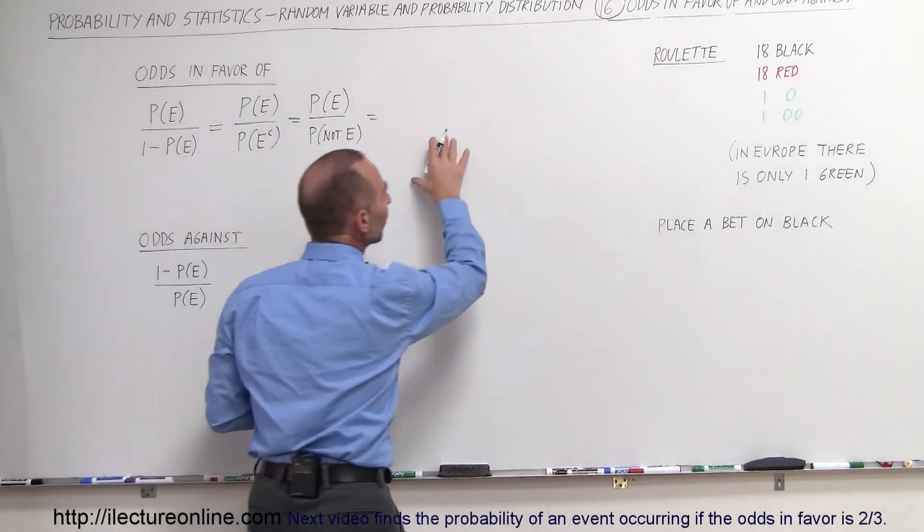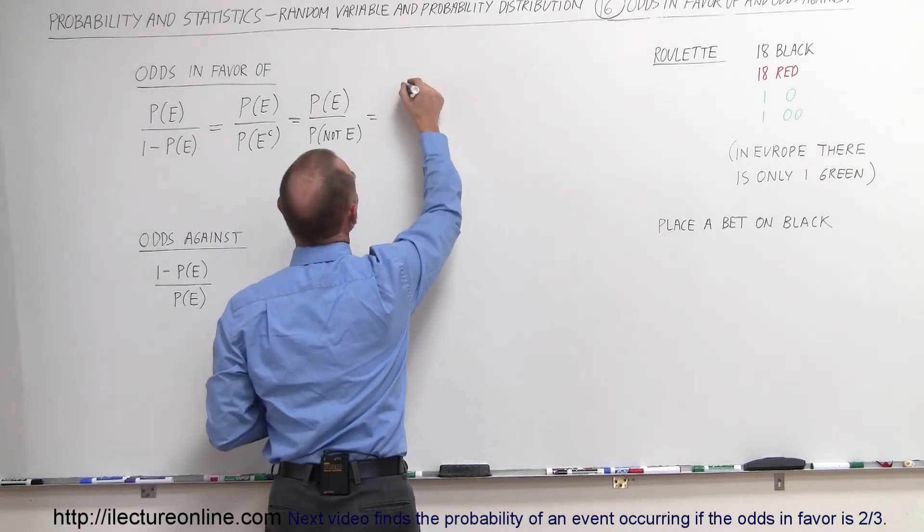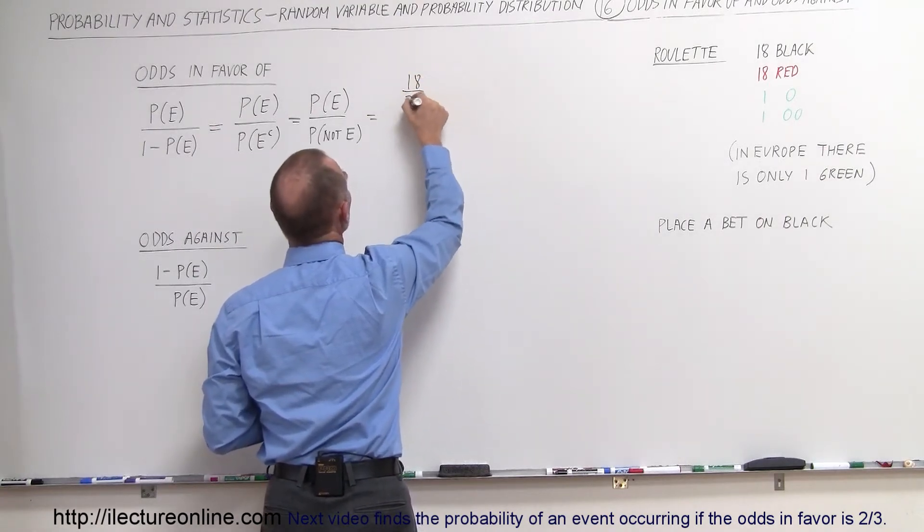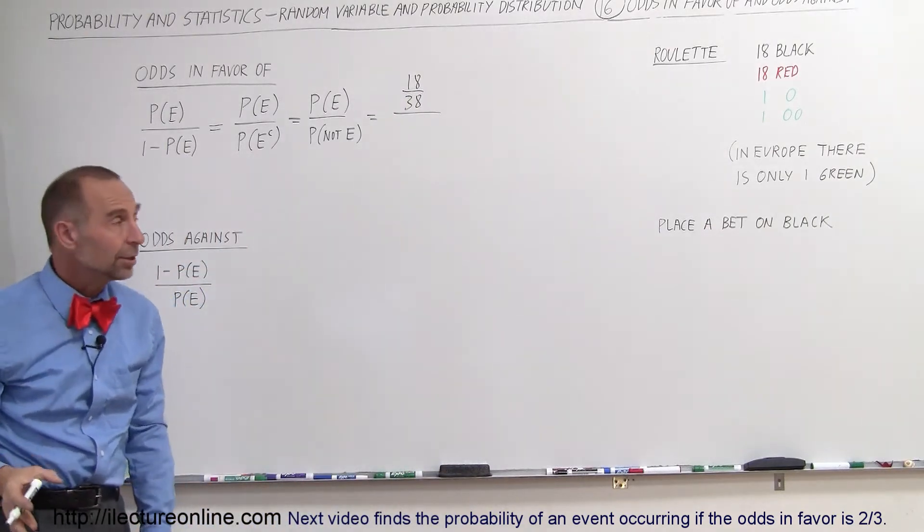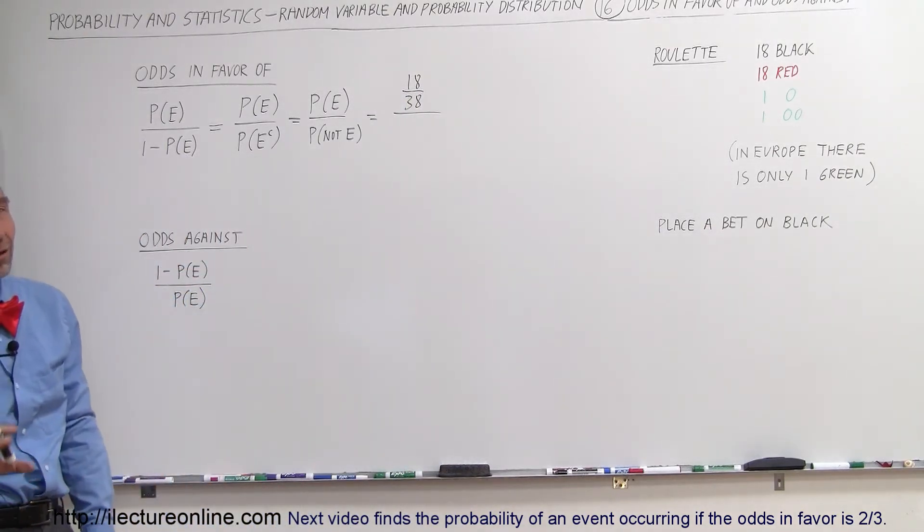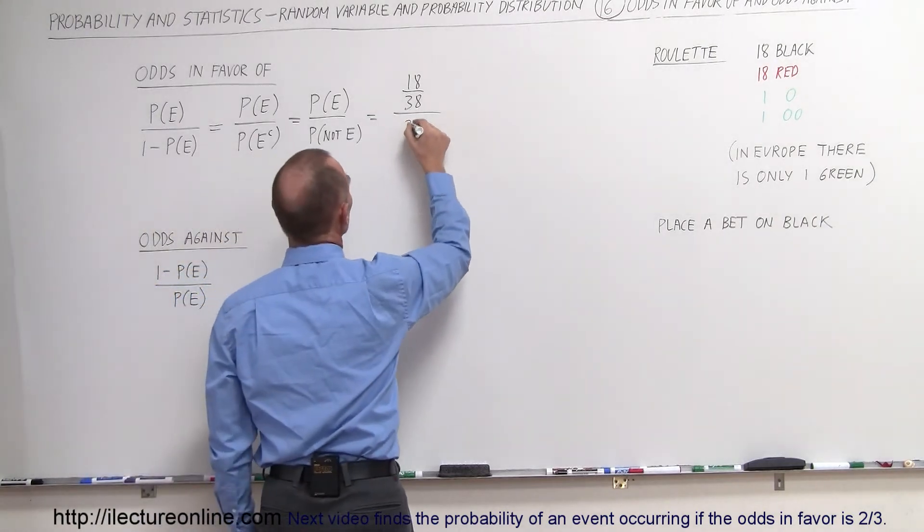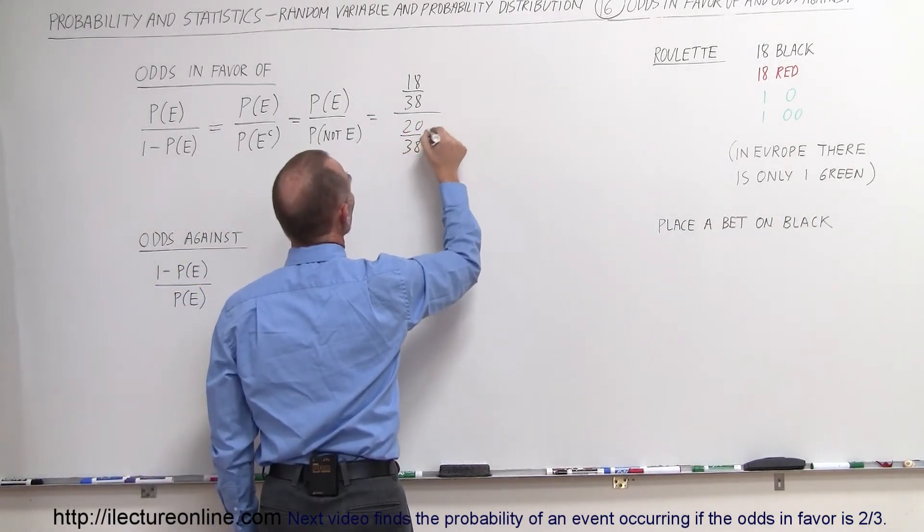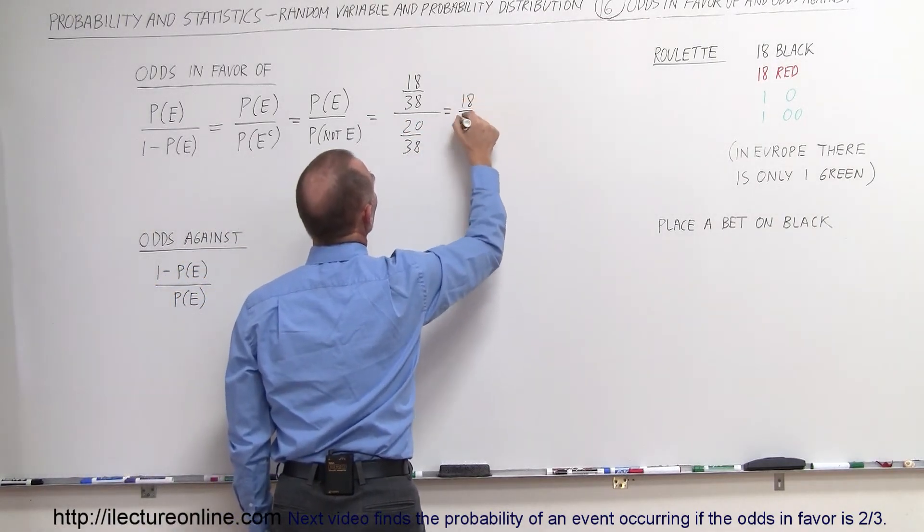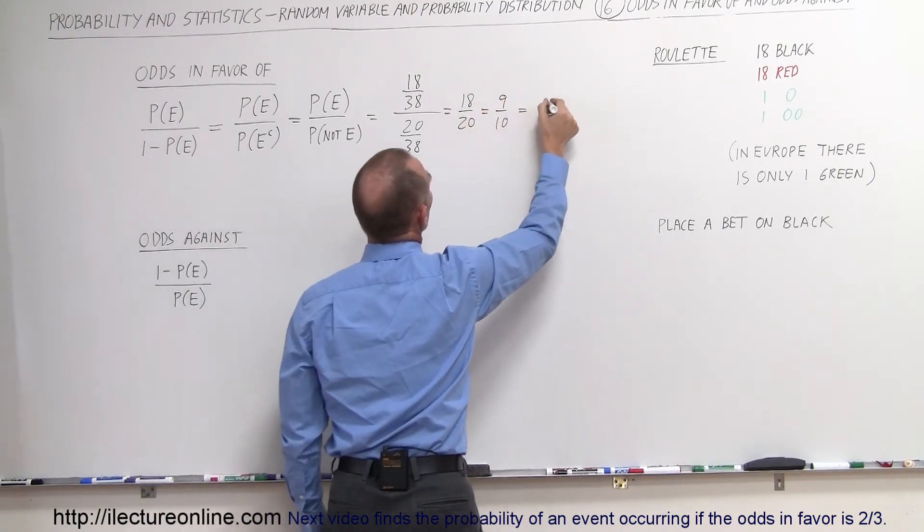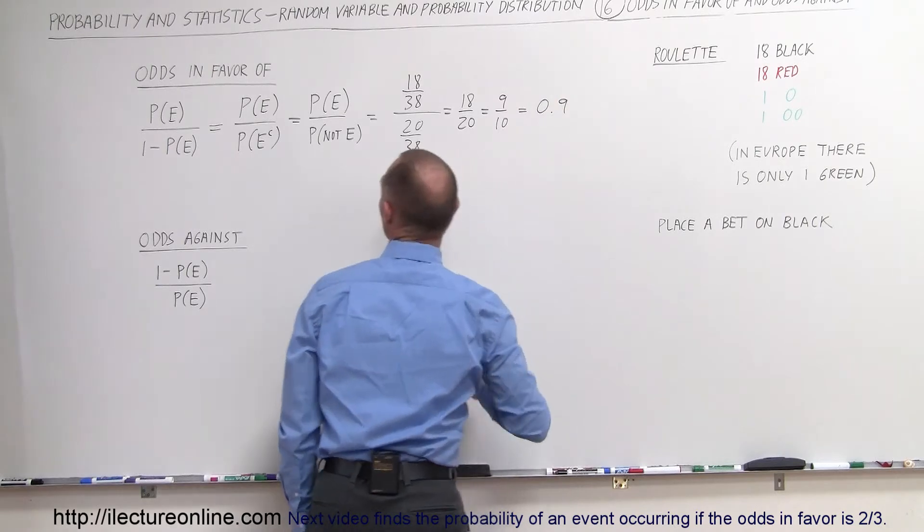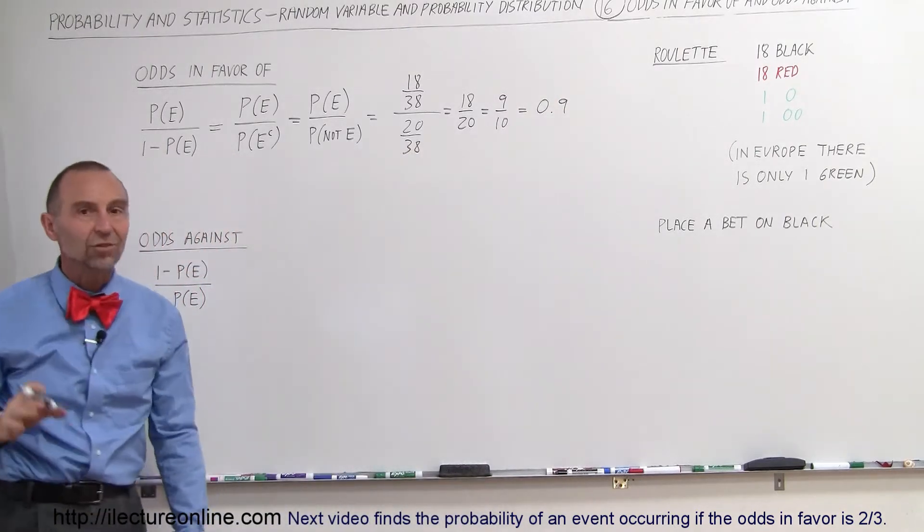So what is the probability of the event occurring? A winning event, that would be 18 divided by 38 possibilities. And of course the remainder, that would be 20 out of 38 of the event not occurring. So 20 divided by 38, which is equal to 18 divided by 20, which is equal to 9 divided by 10, which is 0.9. So that means the odds in favor of winning is 0.9.